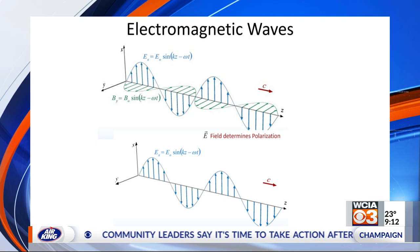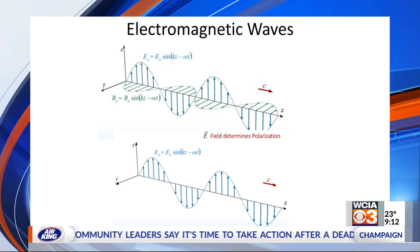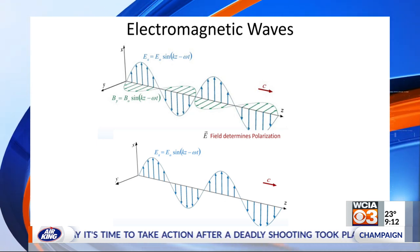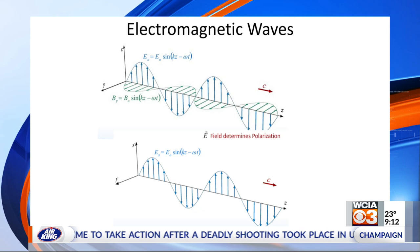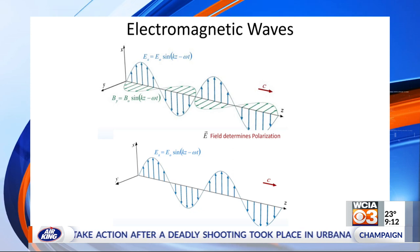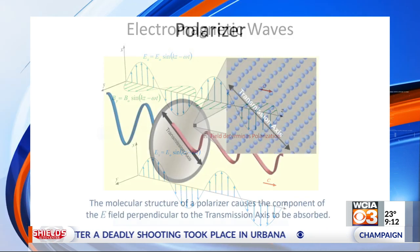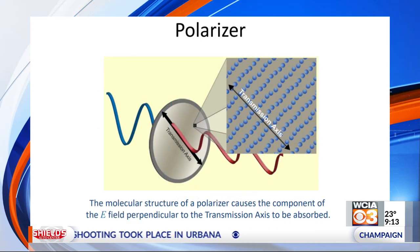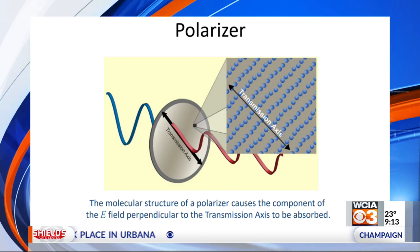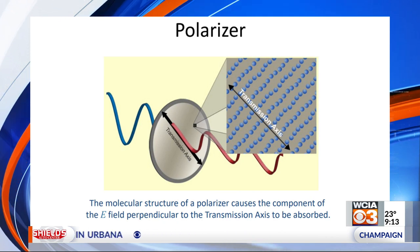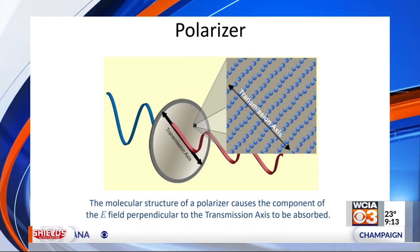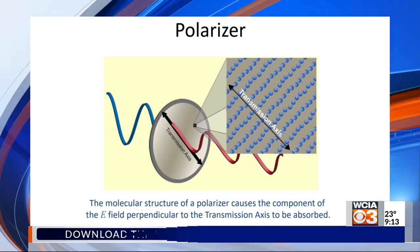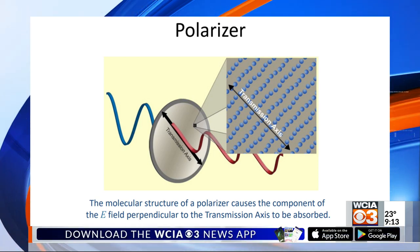The electric field is going up and down, and that will move charges around. If the light goes through a particular material called a polarizer, and the light is polarized along the direction of the long molecules, then it can be absorbed. Otherwise, it'll be transmitted. So that allows us to block one polarization and let the other one through.